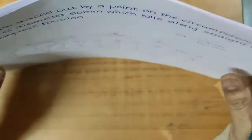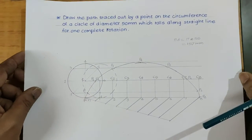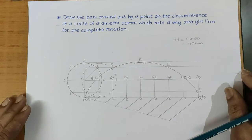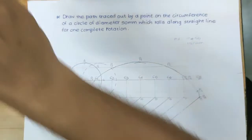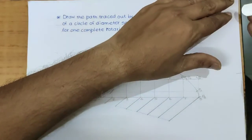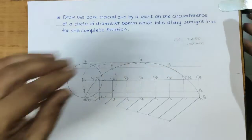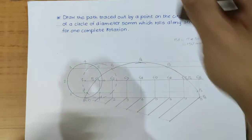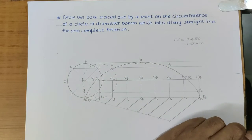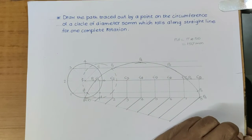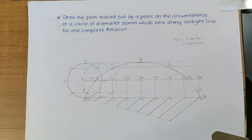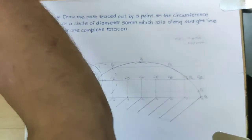In this way we got the cycloid. You can give dimensions as well, and name the curve. The name of the curve is cycloid.